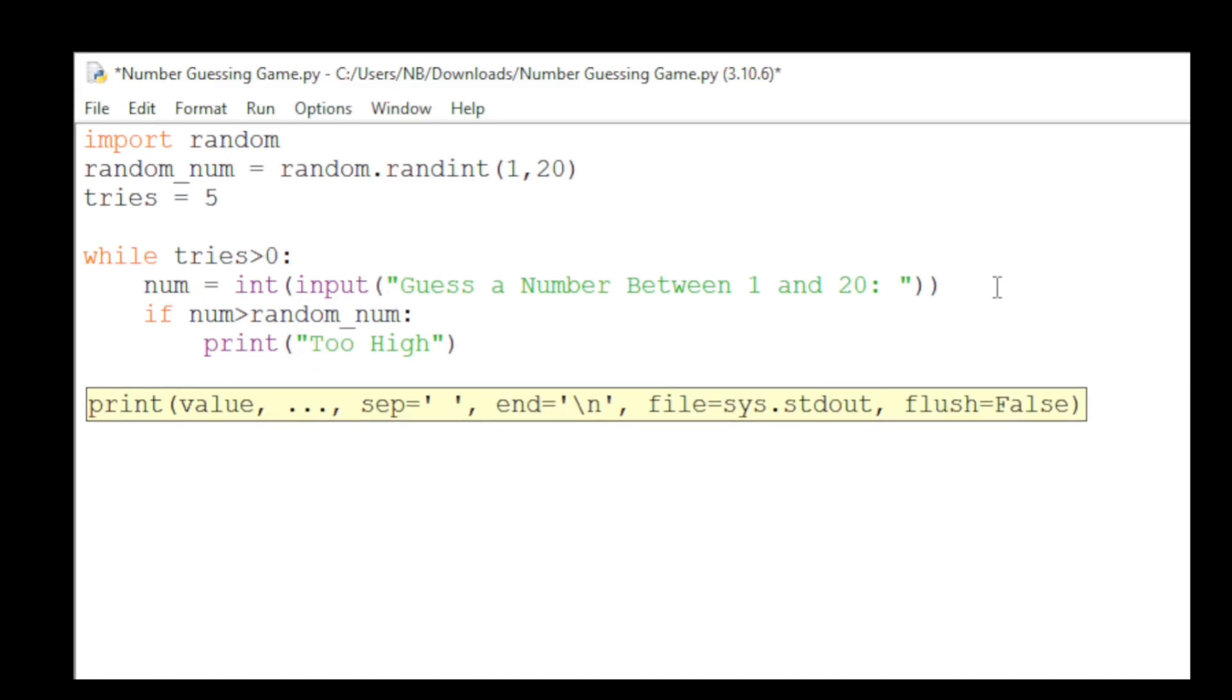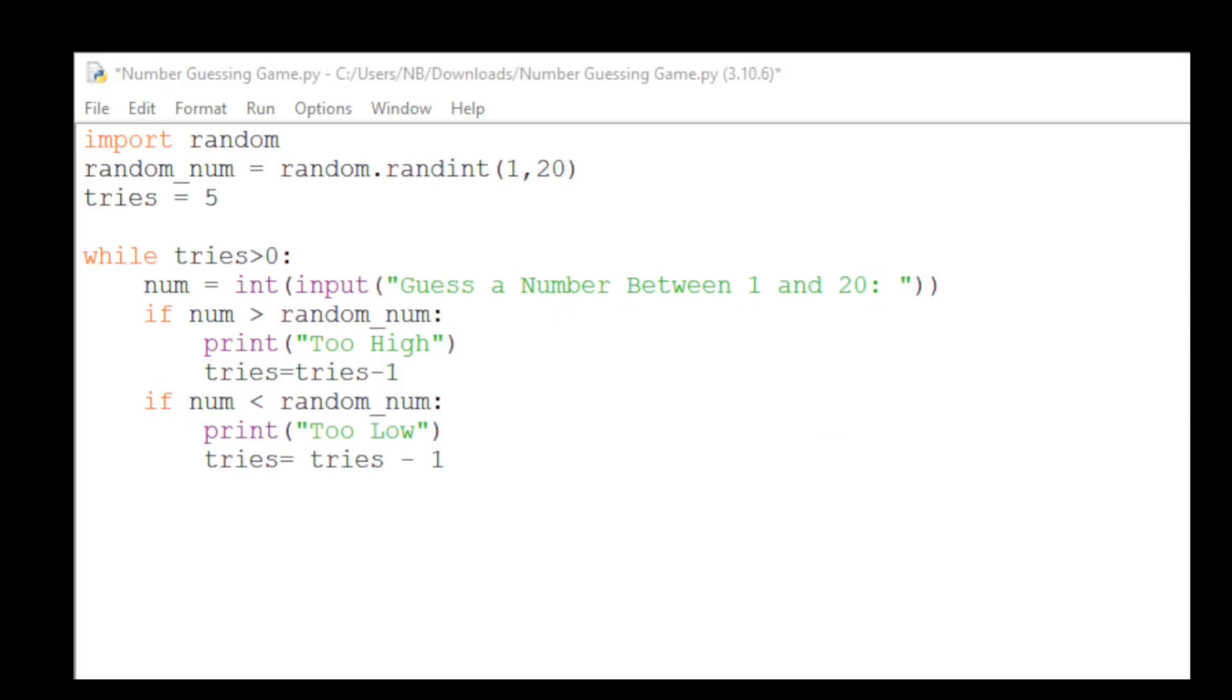We will also decrease the tries by 1. To do this, we'll do tries equals tries minus 1. Similarly, we will do the same thing for the number being less than the random number. Instead of too high, we'll type too low, and we'll also decrease the tries by 1.